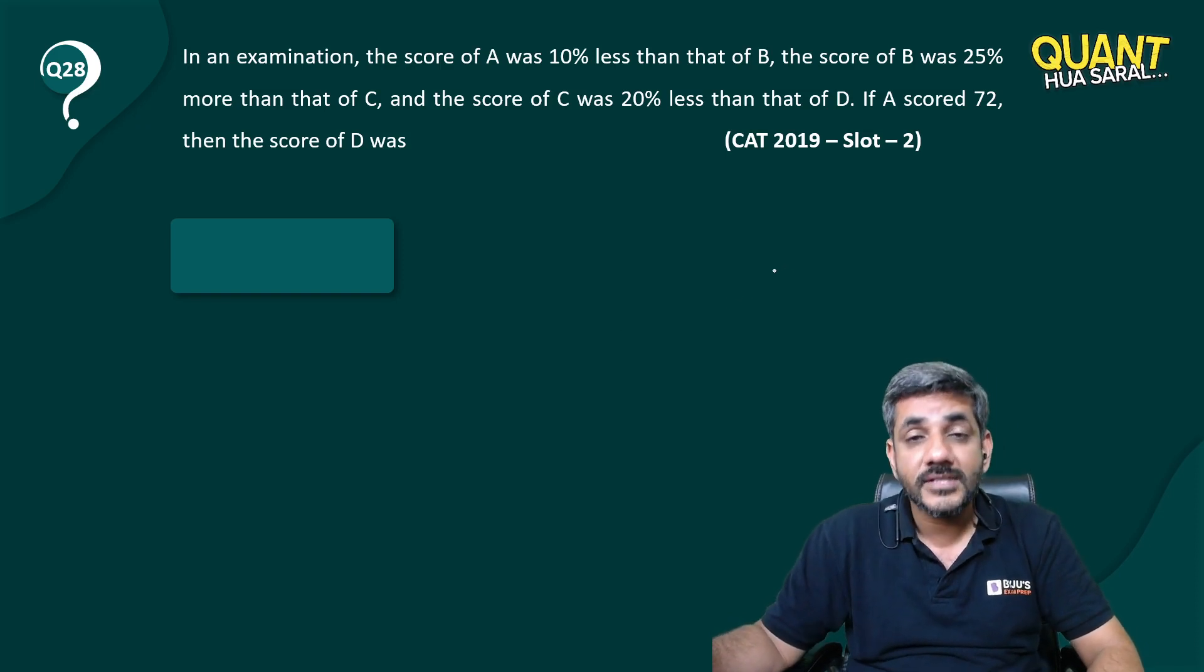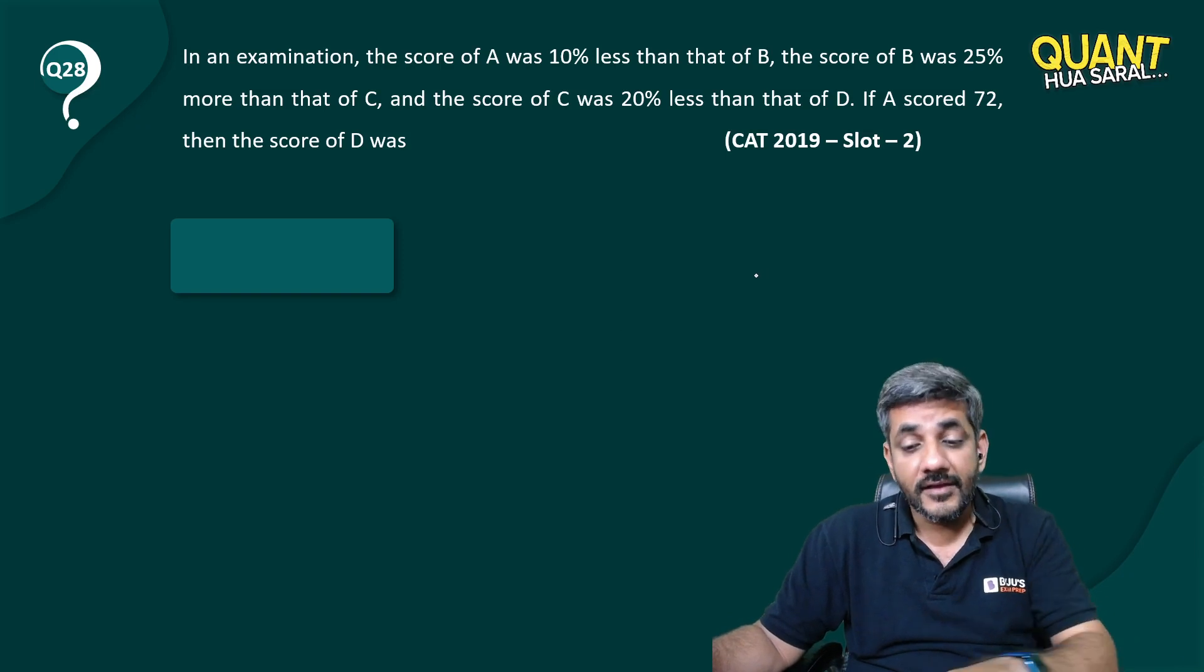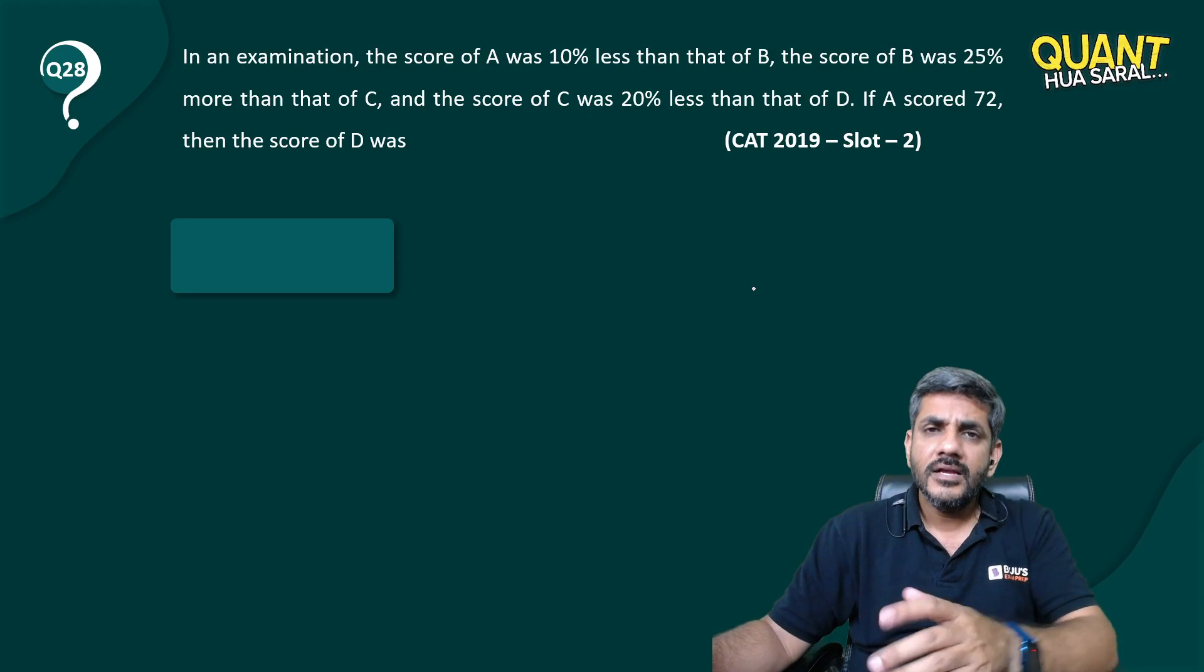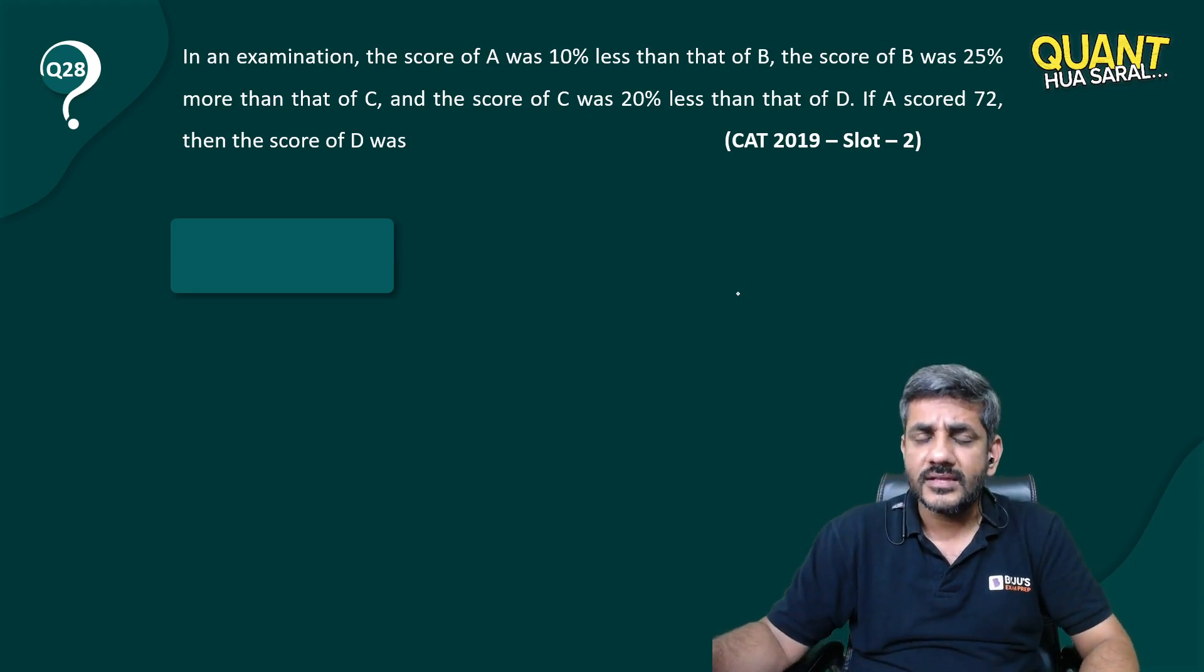The score of C was 20% less than that of D. If A scored 72, what was the score of D? In this question, I would suggest one thing: just pay attention to this part.